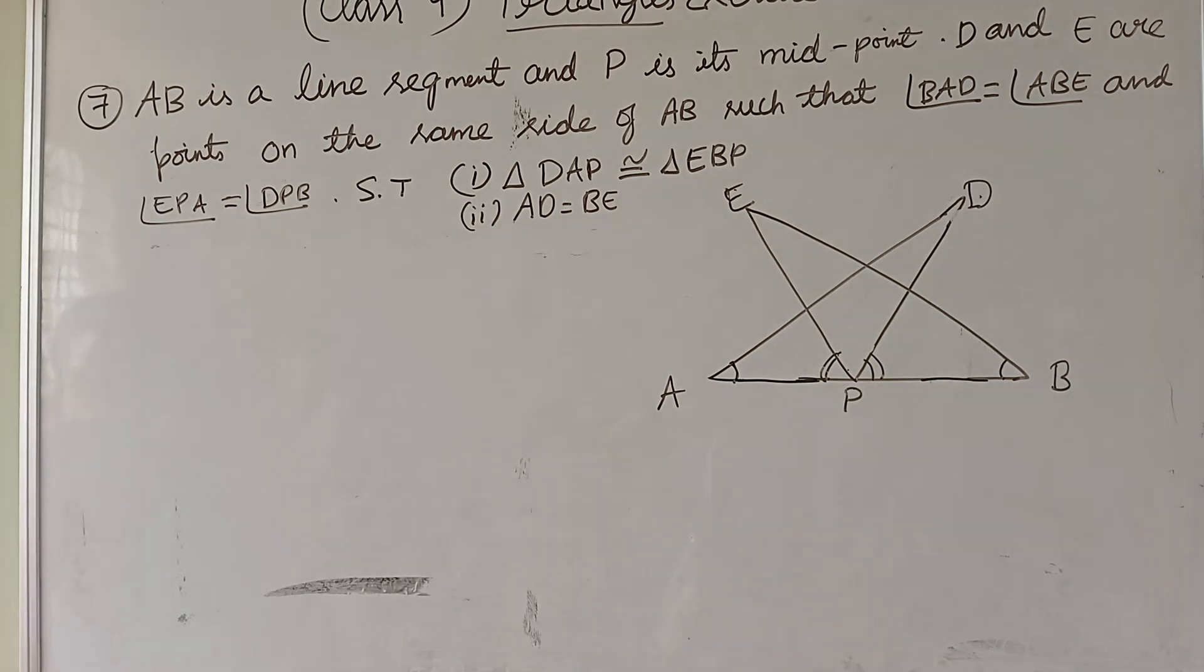AB is a line segment and P is its midpoint. D and E are points on the same side of AB such that angle BAD equals angle ABE and angle EPA equals DPB.